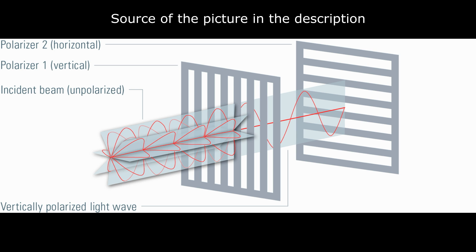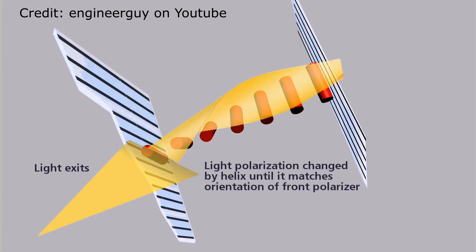Without the liquid crystals, no light would get through the filter in the front because it is oriented 90 degrees to the light source. The screen would be black. But the crystals in between the two filters are optically active. That means that they can rotate the linearly polarized light so it can pass through the filter in the front.